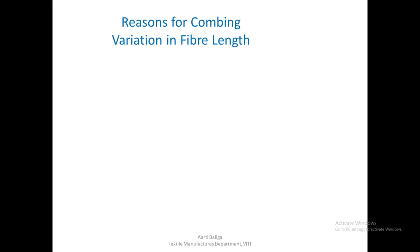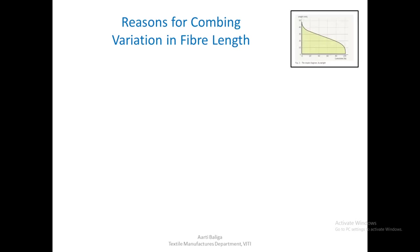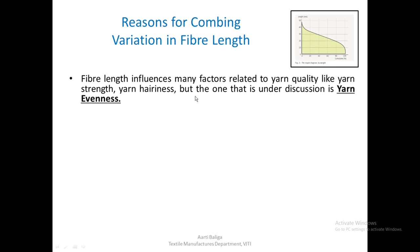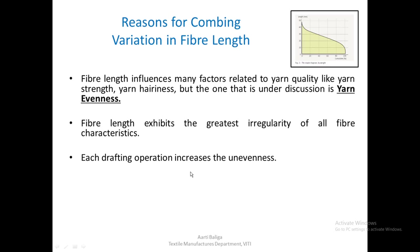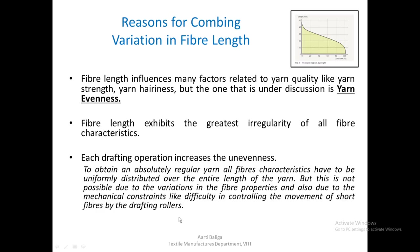We already know that there is a lot of variation in fiber length, and this can be shown in the form of a Bayer Sorter diagram, which we have already studied in previous lectures. Fiber length influences many factors related to yarn quality like yarn strength and yarn hairiness, but the one under discussion is yarn evenness. Fiber length exhibits the greatest irregularity of all fiber characteristics, and it leads to an increase in unevenness in the drafting operation.